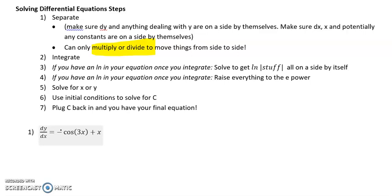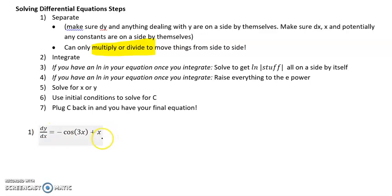We're going to go through three examples together. So for our first example, step one — and I'm following these seven steps above for how to do all of these problems — is to separate. We need to make sure dy and anything dealing with y is on one side, and dx and x are on the other.